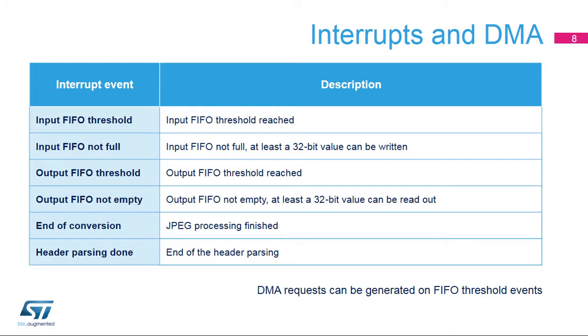The JPEG Codec has six interrupt sources. Input FIFO threshold and input FIFO not-full flags are used to manage the input FIFO, either by the CPU or DMA.